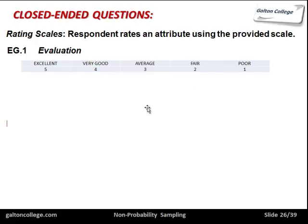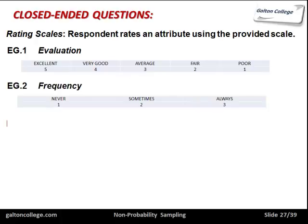There is a bias here in that a lot of people will be pulled to the center one — it's just the way we are as people. So if you want to force them to make a decision, you wouldn't have an odd number; you might have a six or a four. If you had a six, they have to come down one side or the other — three and a half doesn't exist, it's either a three or a four. You could also use rating scales for frequency: do you ever, sometimes, always, etc.